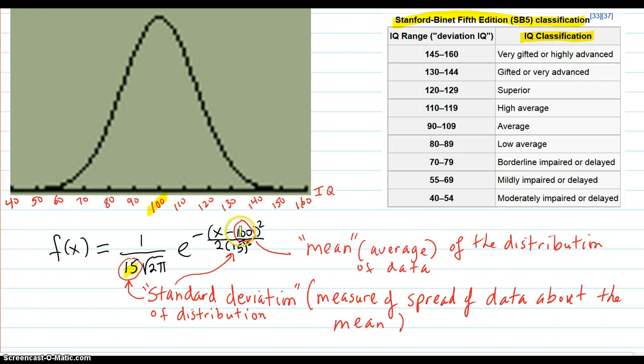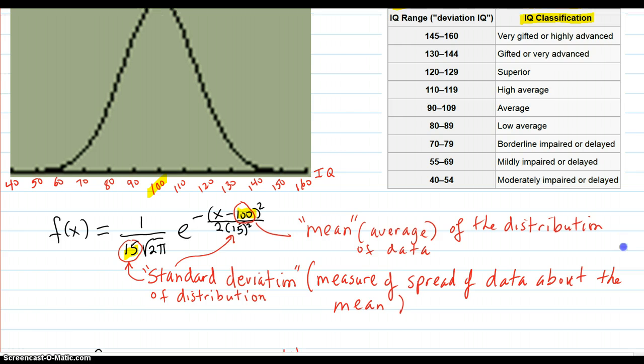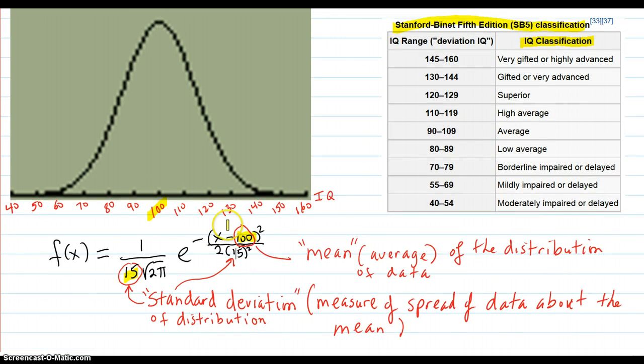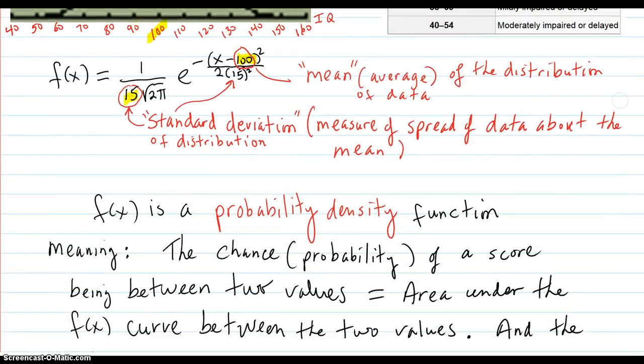This 100 is just the mean or average of the whole distribution. Other than that, the e to a negative x squared type of curve gives you this bell symmetric shape. This is actually a normal curve that this density function is.